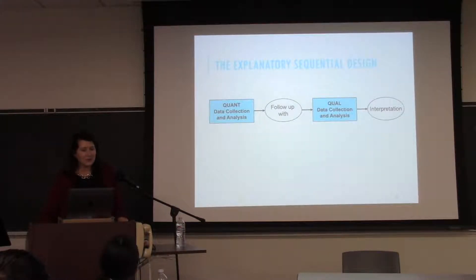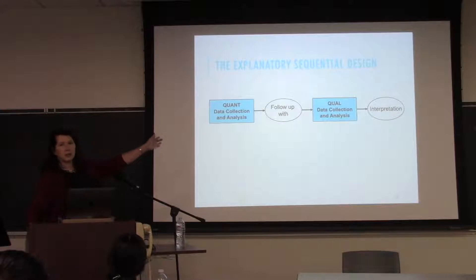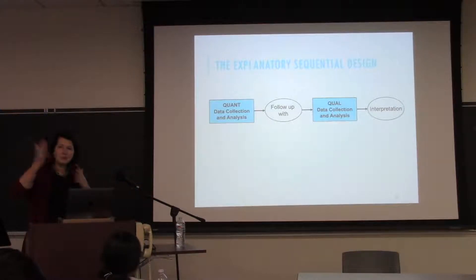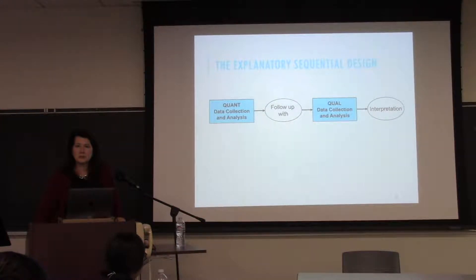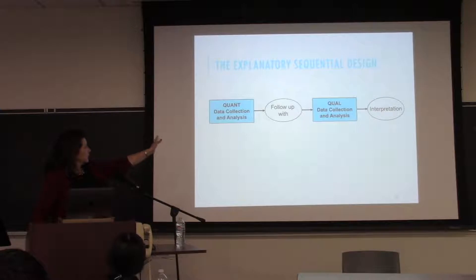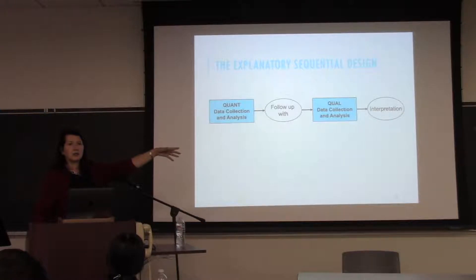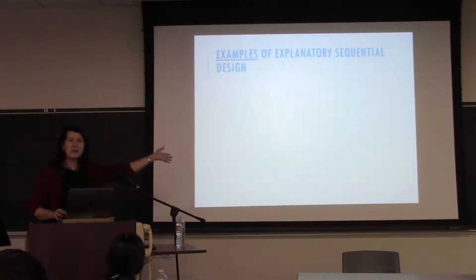The first one is called the explanatory sequential design. What do you notice? There's quantitative and qualitative — that's the mixing. Which one comes first? The quantitative. One feature of the explanatory design is that you start with quantitative data collection, then follow up with a qualitative study, and then make sense of it. That's one classic variation.